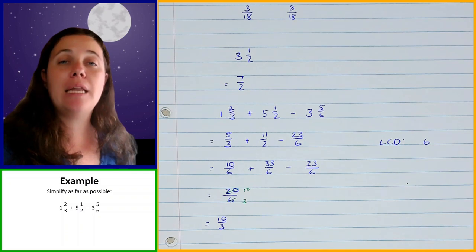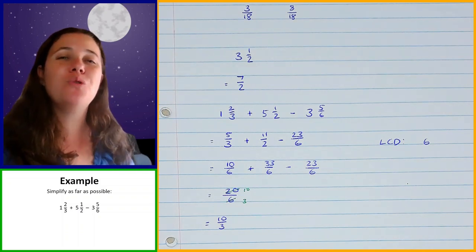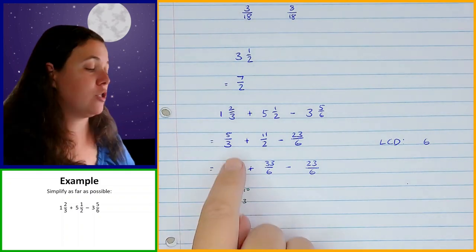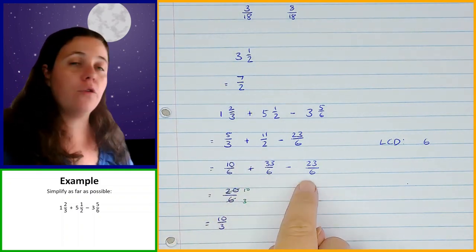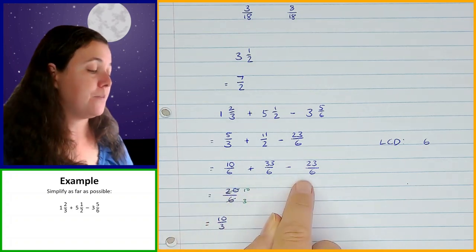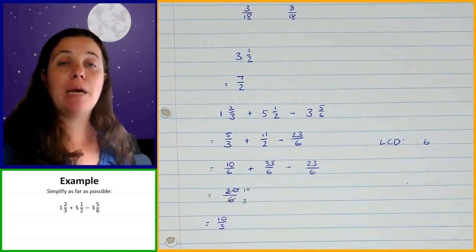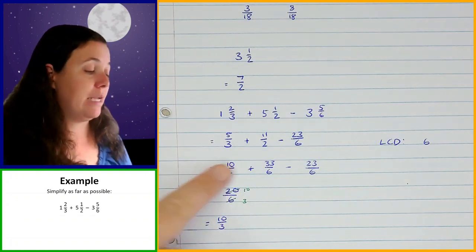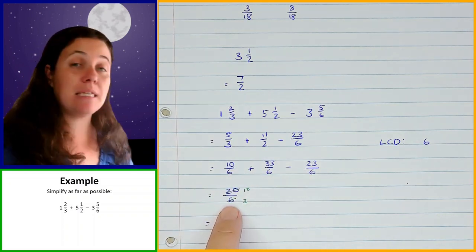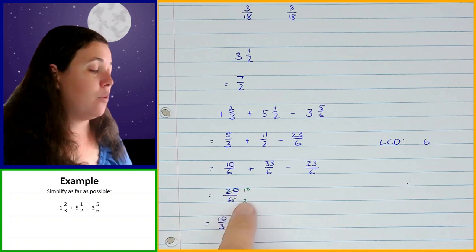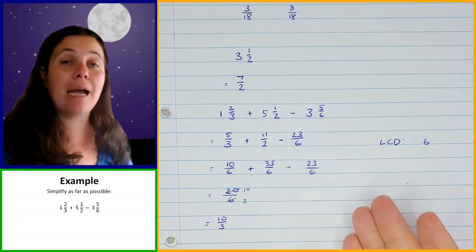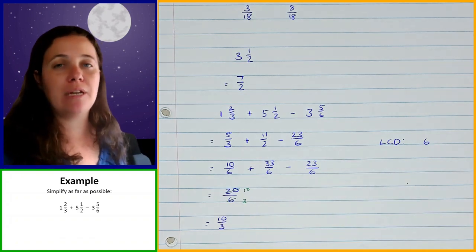So that's what we're going to be doing in these questions today. First, if there are any mixed numbers, convert them to improper fractions. Second, find your LCD — make sure that you know what the lowest common denominator is and convert all the fractions so that they have that denominator. Then you keep the denominator the same and you add and subtract the numerators. And then once you get your answer, you need to check if you can simplify that further. If you can, you need to simplify it. If you can't, you obviously just leave it as it is.